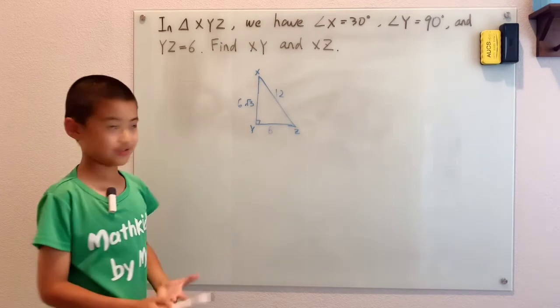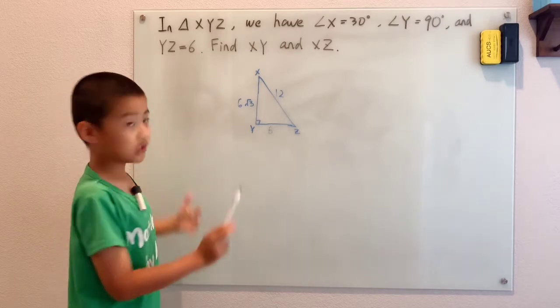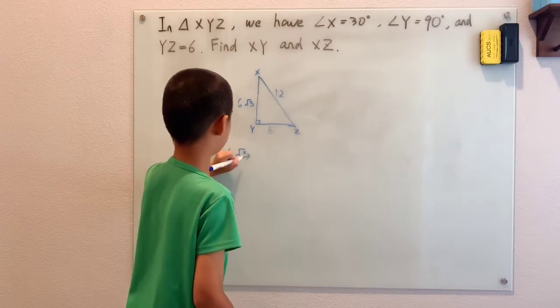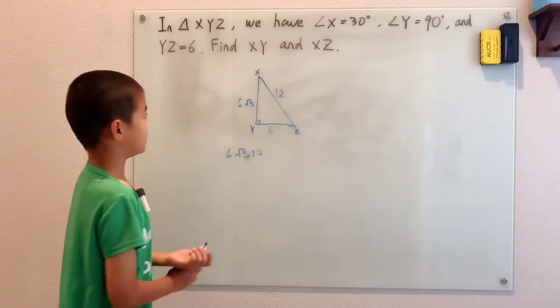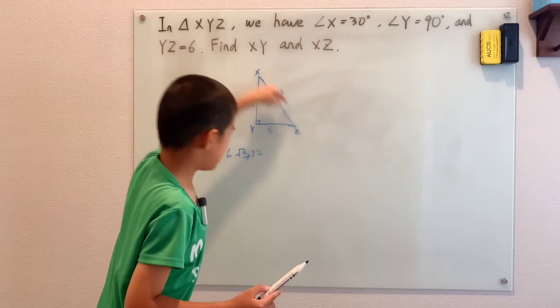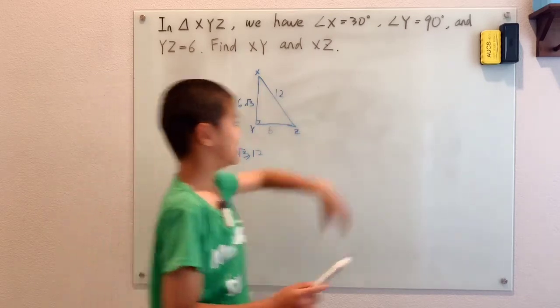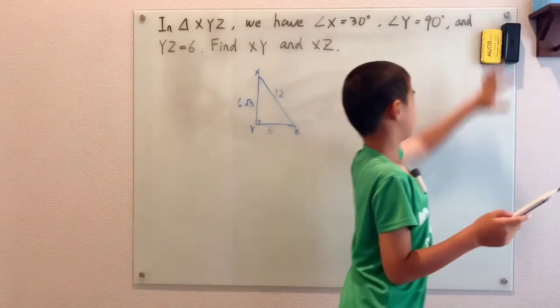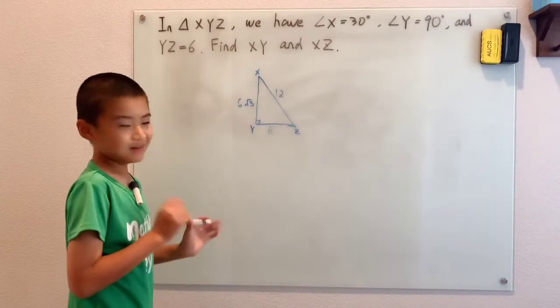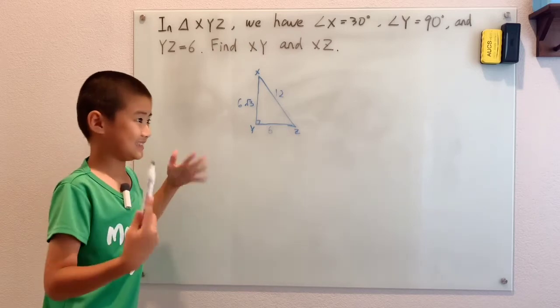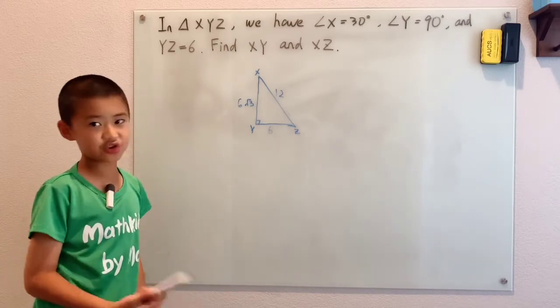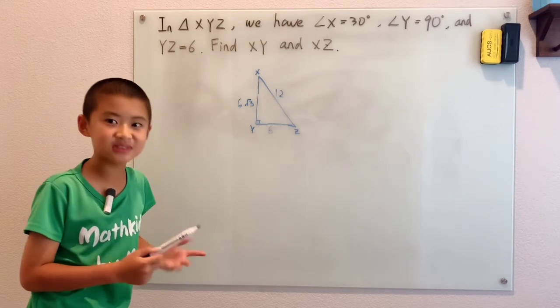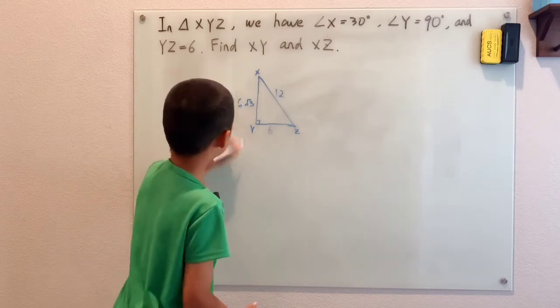Also, once you've got your answer, you need to give it correctly and precisely. You can't just write 6 root 3 and 12. They might think you got them reversed - this is 12, that's 6 root 3 - and that would not be good. So let's try to avoid that risk because you need to make sure you do your best to not make a simple mistake when you could have done a lot better.